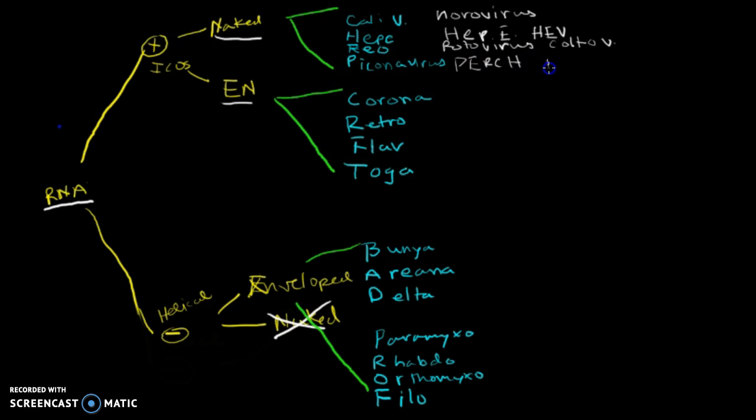And the picornaviruses, just remember the acronym PERCH. So this is pretty easy to remember. You've got polio, echo, rhino, coxsackie, and HAV. Coxsackie and hepatitis A. And then your coronaviruses, you've got corona and your SARS. Retroviruses, that's your HIV and your HTLV virus.